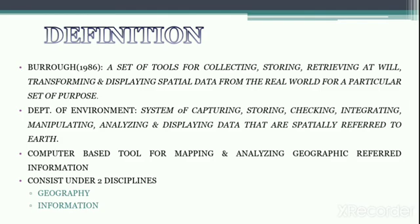Thus a Geographic Information System is basically a computer-based tool for mapping, collecting and analyzing geographic information. It allows virtually anyone to create a map to help explain historic events, plan for the future, and predict outcomes. GIS is an organized collection of computer hardware, software, geographic data and personnel designed to effectively capture, store, update, manipulate, analyze and display all forms of geographically or spatially referenced information.